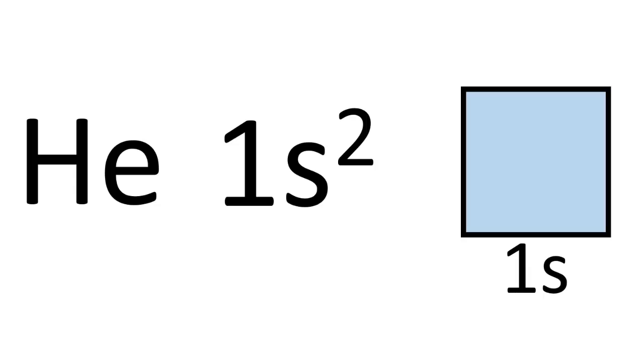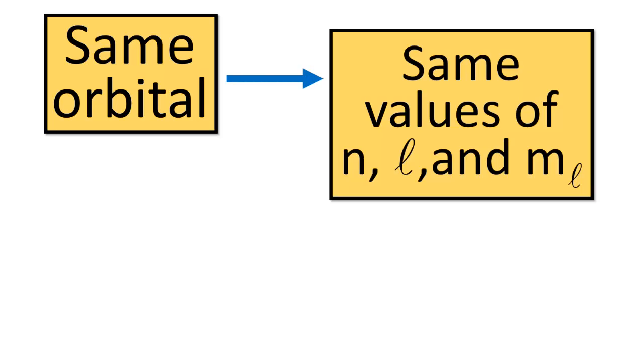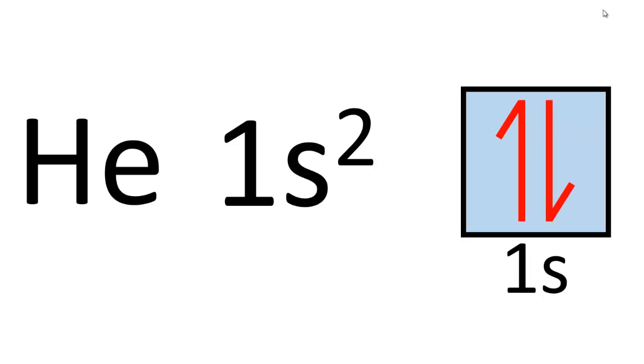Let's look at the ground state electron configuration of a helium atom. We have two electrons in helium's 1s orbital, but how do their spins orient relative to one another? In 1925, Wolfgang Pauli answered this with the Pauli Exclusion Principle, which states that no two electrons in an atom can have the same four quantum numbers. If two electrons share the same orbital, they have the same principal, azimuthal, and magnetic quantum numbers, so they must have opposite spin quantum numbers. This means each orbital can hold at most two electrons with opposite spin orientations, so the helium orbital diagram shows two arrows pointing in opposite directions.